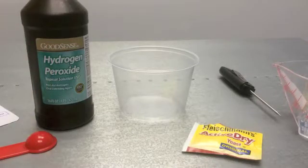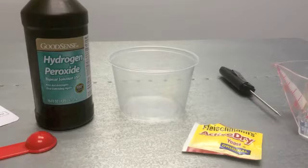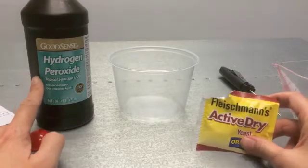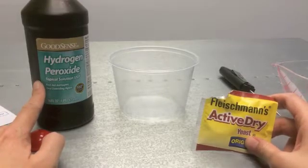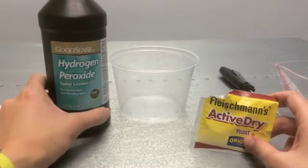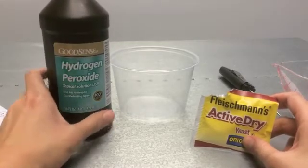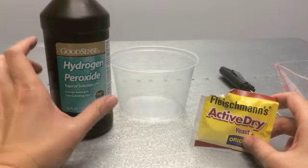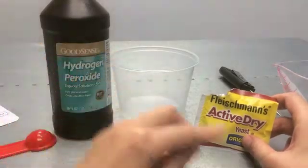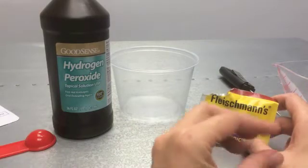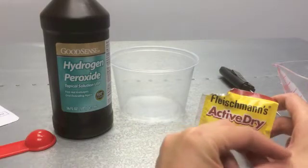This next lesson involves students watching two chemical reactions take place. Those chemical reactions are going to involve hydrogen peroxide and active dry yeast, and you can activate prior knowledge by asking them if they know what hydrogen peroxide is. Sometimes people put it on cuts. Does anyone know what happens when people put it on cuts? Some of the students will know that it actually makes the wound bubble a little bit, so there's a little bit of fizzing where you pour the peroxide.